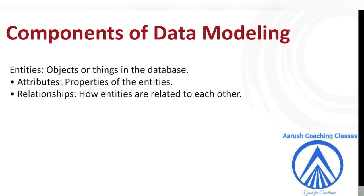When you talk about data modeling, we have the objects in the database: attributes and relationships. Attributes are the properties — the properties of the entities. And relationships are how they are related to each other. Properties is basically the data which you are going to store in your table. And relationships, as I told you, is how you will connect — you need a connecting wire.